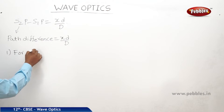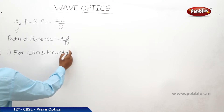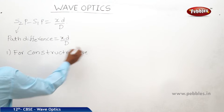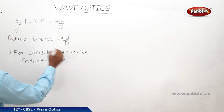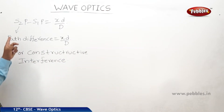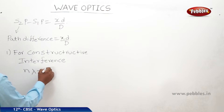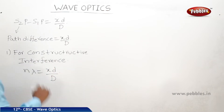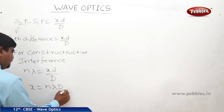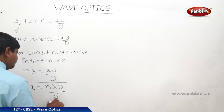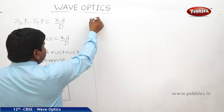For constructive interference, we know that s2p minus s1p is equal to n lambda. Therefore n lambda is equal to xd by D. From this we can write x is equal to n lambda capital D by small d.